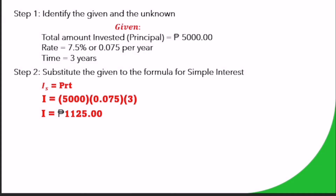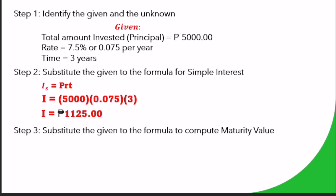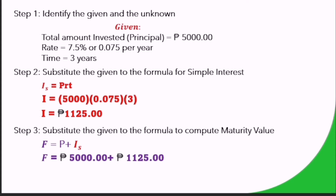Step 3 — Substitute the given into the formula to compute maturity value: F equals P plus I sub s. So F equals 5,000.00 pesos plus 1,125.00 pesos. Therefore, F equals 6,125.00 pesos.